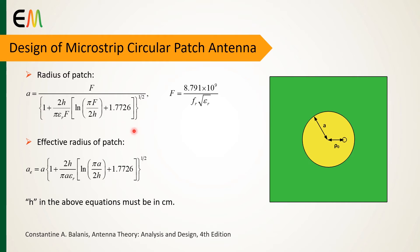The radius of the patch, defined by parameter a, is computed using this relation. The f parameter is proportional to the resonant frequency and dielectric constant of the substrate. The effective radius of the patch is calculated using this equation, and for these equations the h parameter must be in centimeter units.